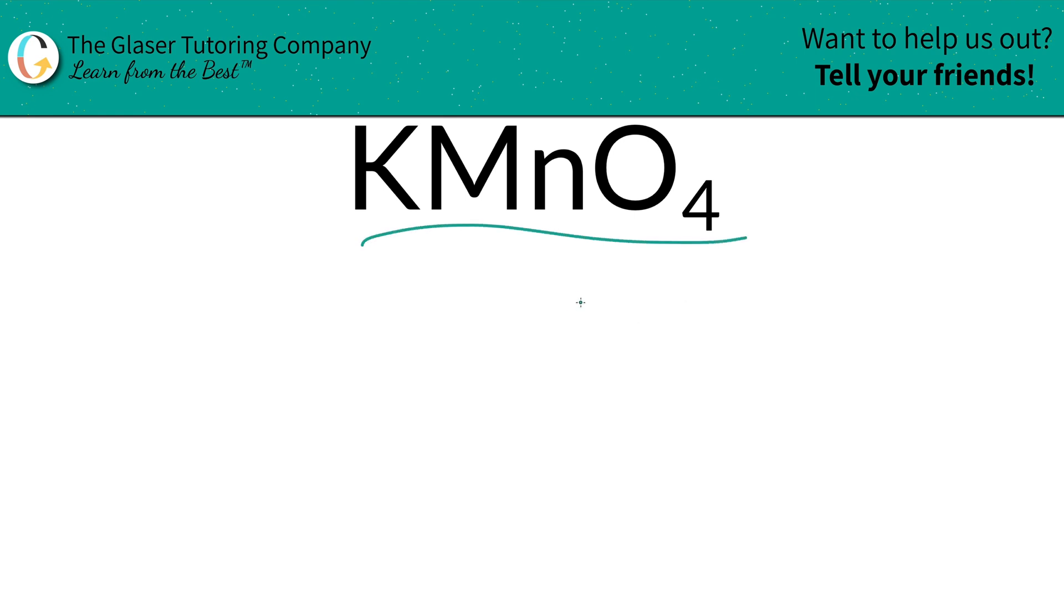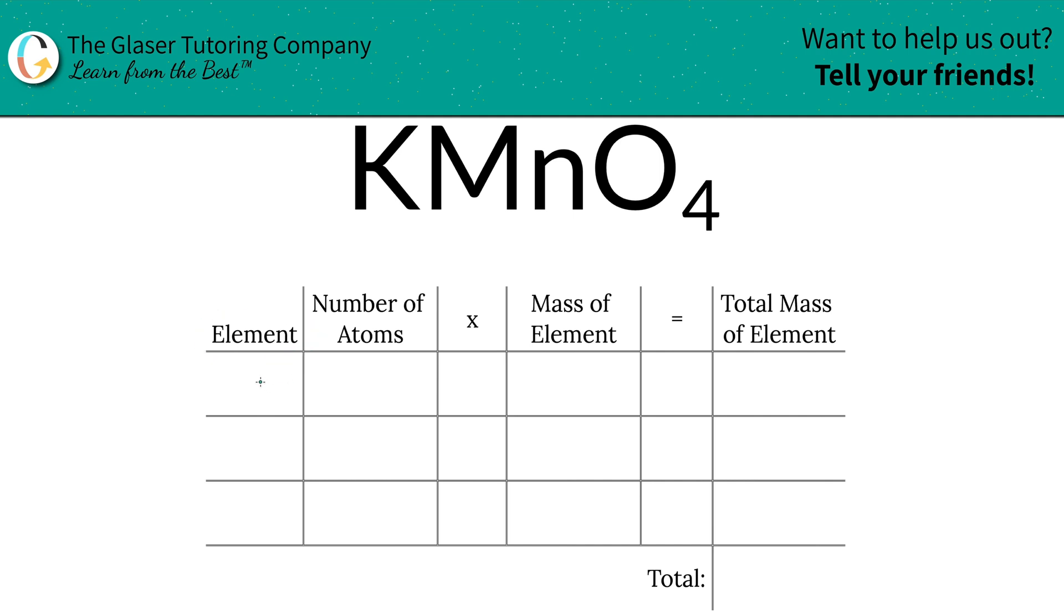So let's take a look at how simple this is. I've created a nice little table. The first thing we're going to do is write the elements we see in the compound. So we have potassium, we have manganese, and we have oxygen.